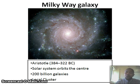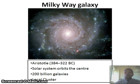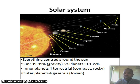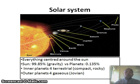To orientate ourselves in terms of where we are, we need to first look at the Milky Way Galaxy. The Milky Way Galaxy was first described by Aristotle. It is part of the local cluster, and even though there are 200 billion galaxies, it contains the solar system which orbits its center. The solar system is basically everything centered around the sun. Since the sun has 99.85% of the mass of the solar system, it has a very high gravitational pull on all the other planets. Earth is the only planet we know of that has water — hashtag, water is life.